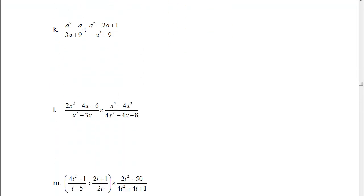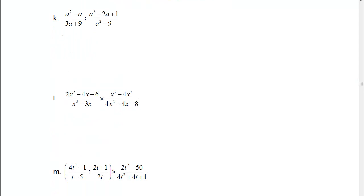For problem k, we want to factor all those parts. Common factor is a outside of a minus 1 over 3 outside of a plus 3. Division remember we change to a multiplication, but to do that we have to take the reciprocal of whatever follows, so that's going to be a plus 3 and a minus 3 when we factor a squared minus 9, difference of squares.